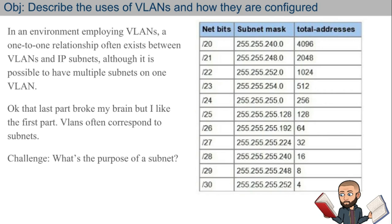In an environment employing VLANs, a one-to-one relationship often exists between VLANs and IP subnets. Although it is possible to have multiple subnets on one VLAN, I would just suggest keeping each VLAN to a particular subnet to avoid unnecessary complexity.